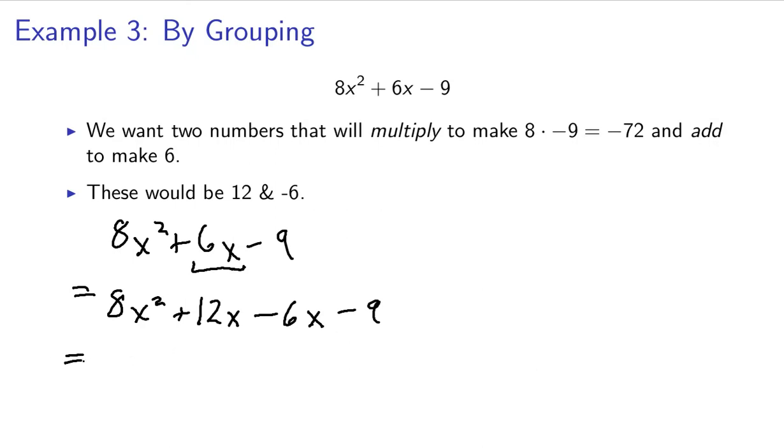So, now that we have 8x squared plus 12x minus 6x minus 9, I'm going to factor those out. I'm just going to group these pieces together like this. And also, I'm going to put a small addition sign here and group these two together.